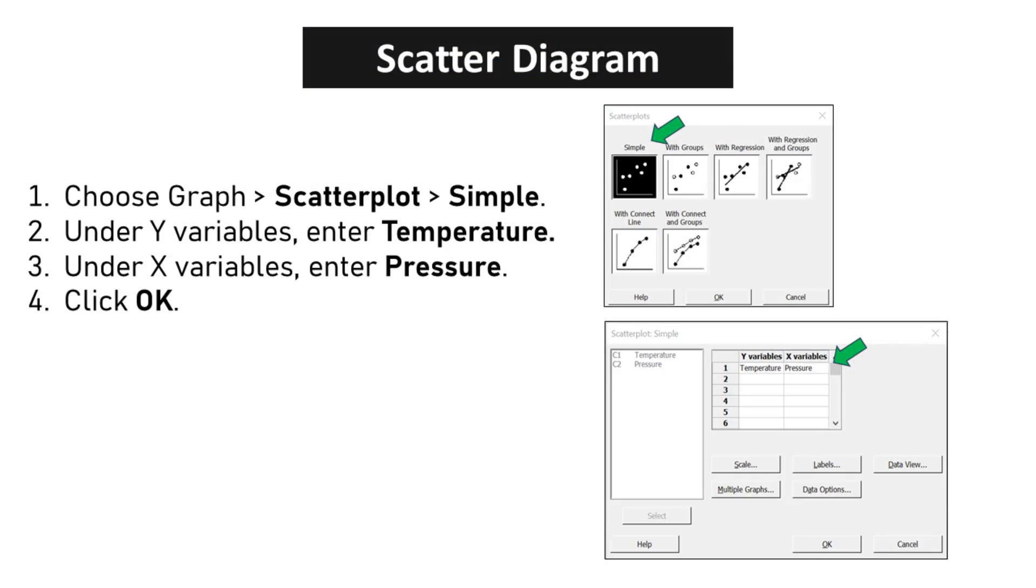Choose Graph, Scatter Plot, Simple. Under y variables, enter temperature. Under x variables, enter pressure, click OK.